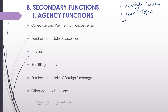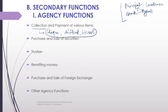The first agency function is the collection and payment of various items. The commercial bank will collect certain items on your behalf. For example, if your customer gave you a check and you deposit that check in the bank, the bank will collect the payment of that check. If you have invested in shares, you get dividend — the bank will collect the dividend payment on your behalf. If you have invested in debentures, you get interest — the bank will collect that interest payment on your behalf. So items like checks, dividends, and interest are all collected by the bank on your behalf.